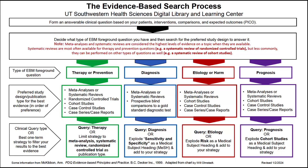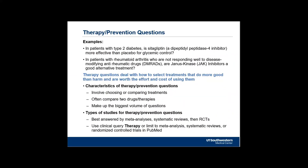I'm going to go through these types of clinical questions pretty quickly so this video doesn't go too long. Therapy and prevention questions are going to be the ones you run into most often because those are the ones investigated most by medical researchers. They involve choosing or comparing treatments — two drugs a lot of the time, but also surgical procedures, psychotherapy, music therapy, or whatever type of therapy. And they're best answered by meta-analyses or systematic reviews if you can find them, and then randomized control trials, then work your way down.